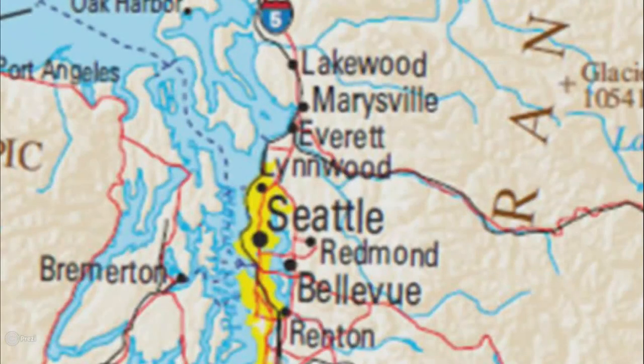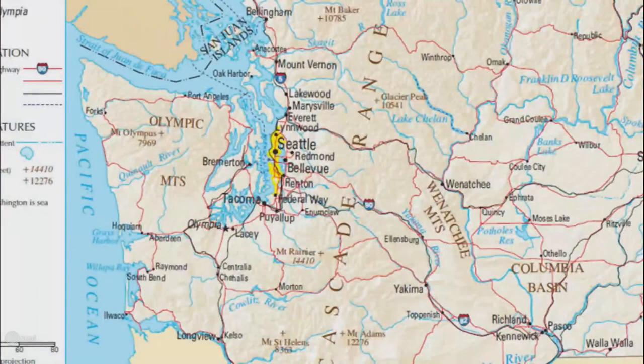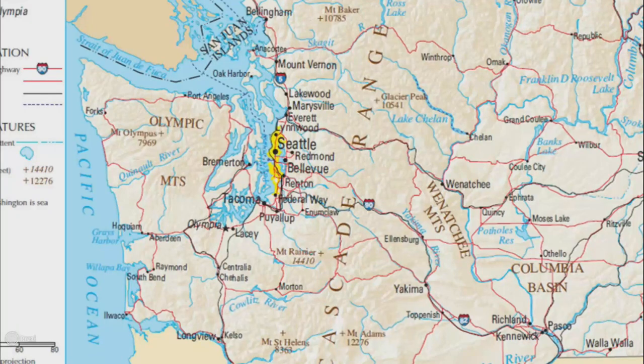Here you can see many cities in Washington State and their sizes. Here you can see the three mountain ranges in Washington State. The Olympic Mountains are by the Pacific Ocean. The Cascades are in the middle. The Wenatchee Mountains are east of the Cascades and are smaller.